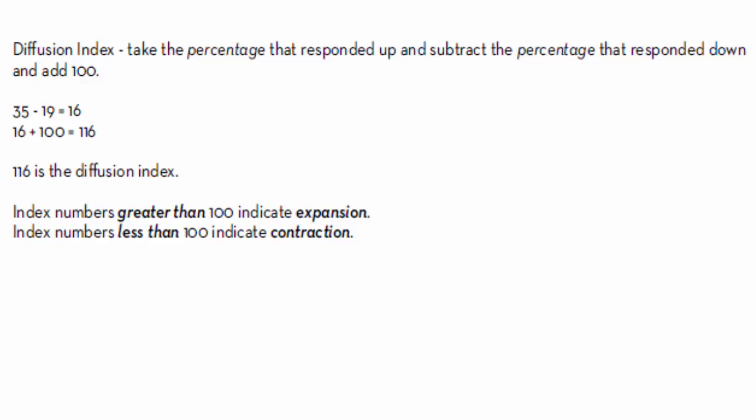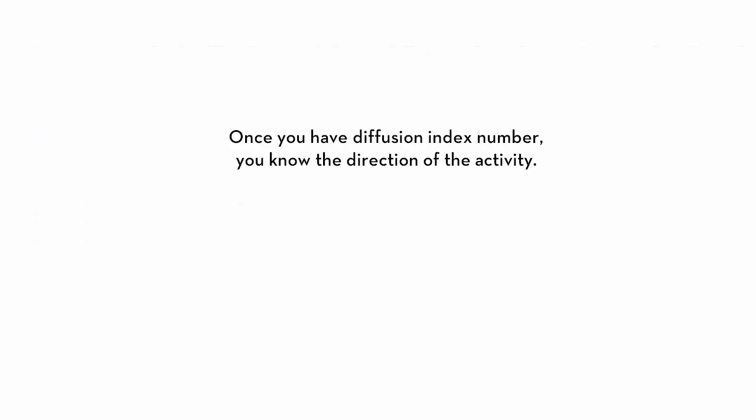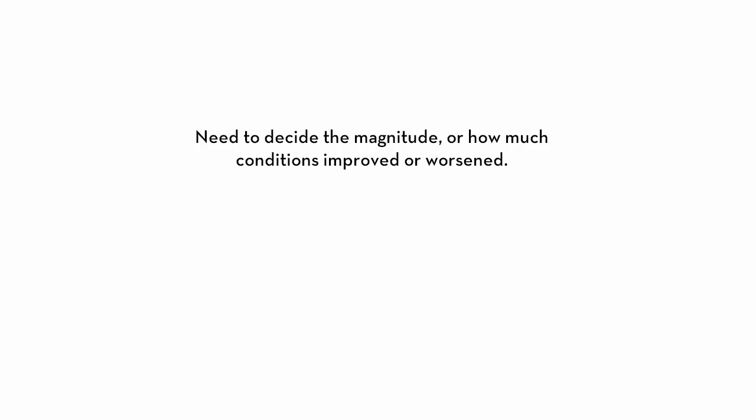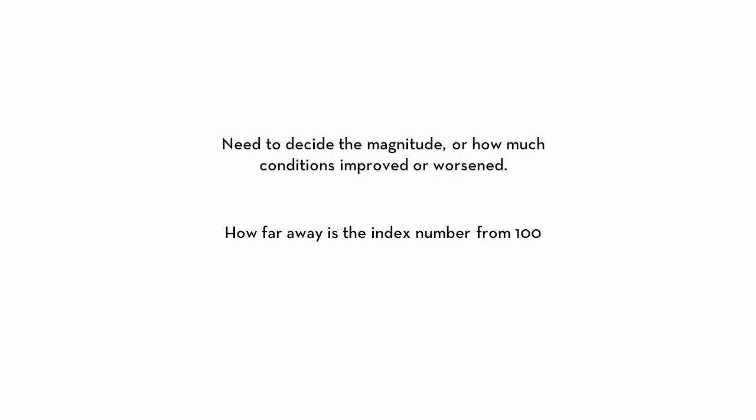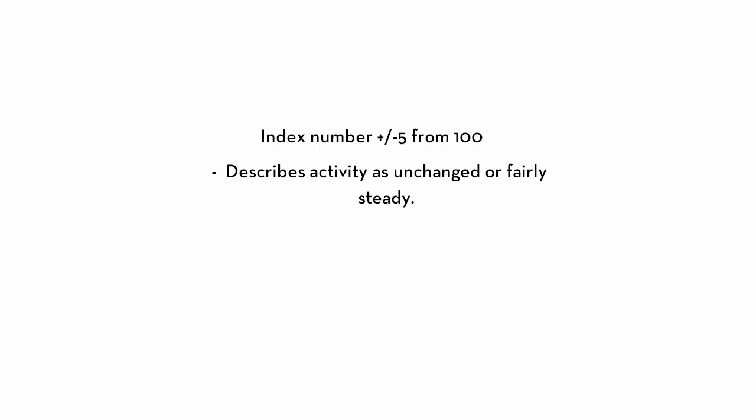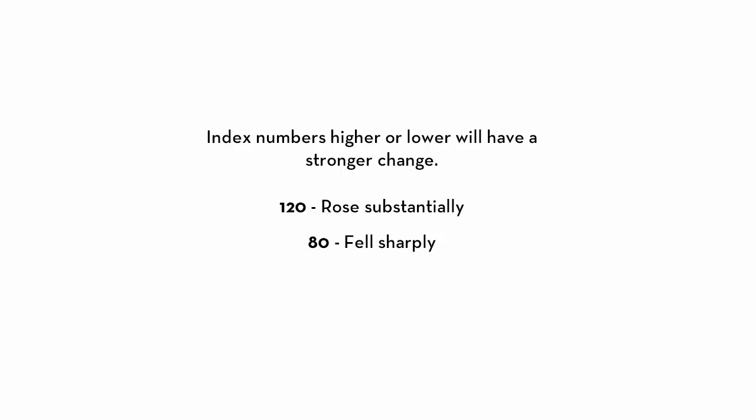Once you have your diffusion index, you know the direction of activity. Now you have to decide on the magnitude — how much did conditions improve or worsen? How far away is the index number from 100? If the index number is just slightly different than 100, plus or minus 5, we might describe that as basically unchanged or fairly steady. However, if your index number is higher or lower than that, it's a stronger change. The higher or lower the number is from 100, the stronger the change.